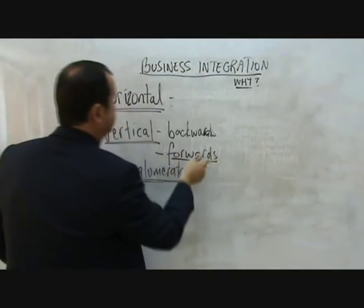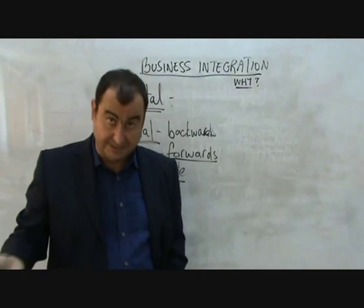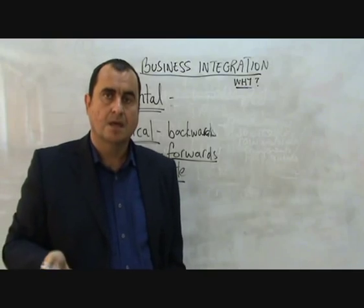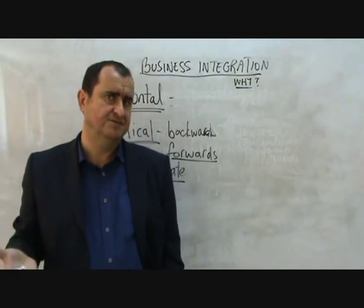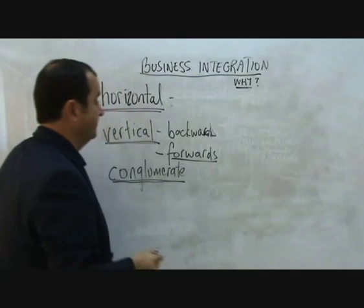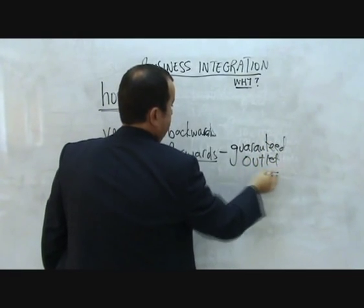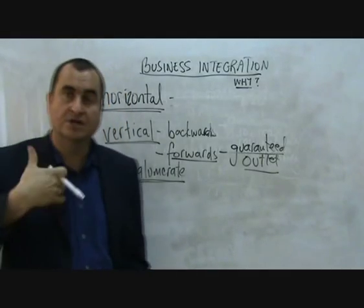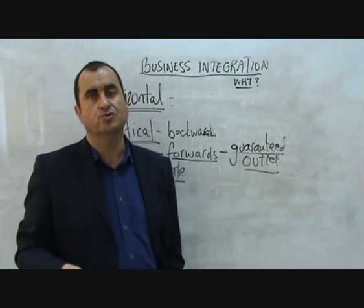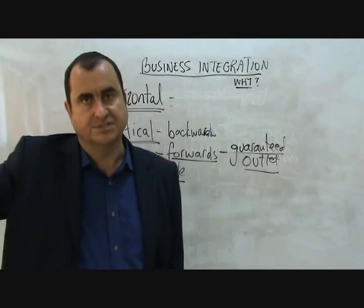Forwards vertical integration is when a firm buys another firm at a later stage of production. So if a car manufacturer — secondary sector — bought up a number of car showrooms, that would be forwards vertical integration. Or if a film production company bought a chain of cinemas, it would also be forwards vertical integration. The main benefit is a guaranteed outlet for your products. You're also closer to the customer and can respond better to what they want. You deny competitors an outlet, and you boost profit by absorbing what was previously a separate business.